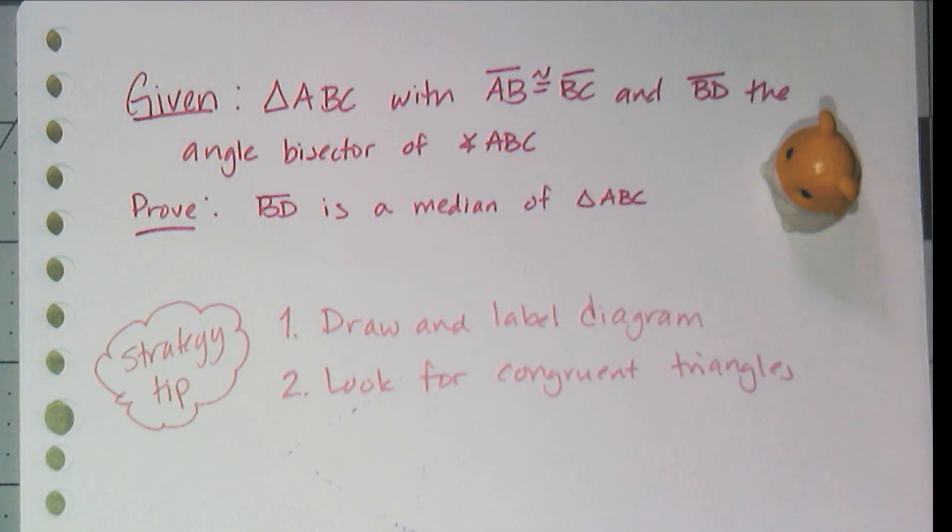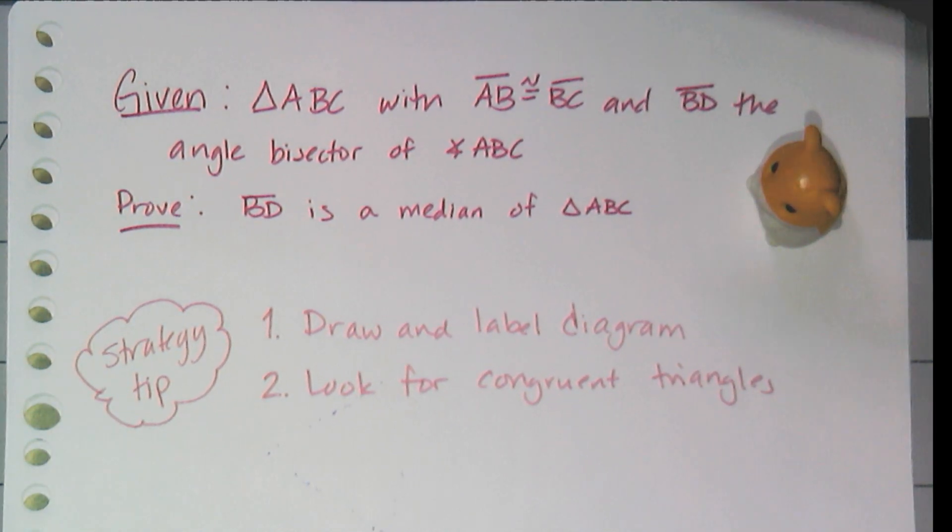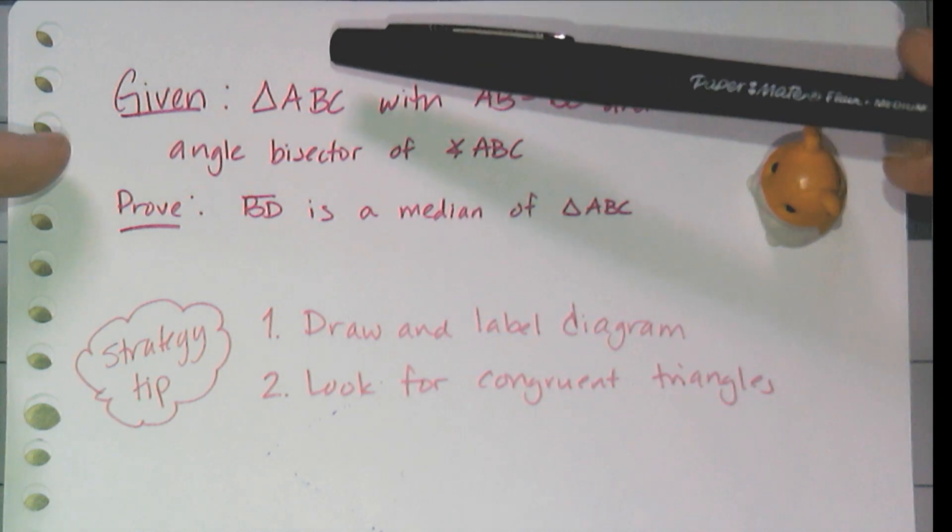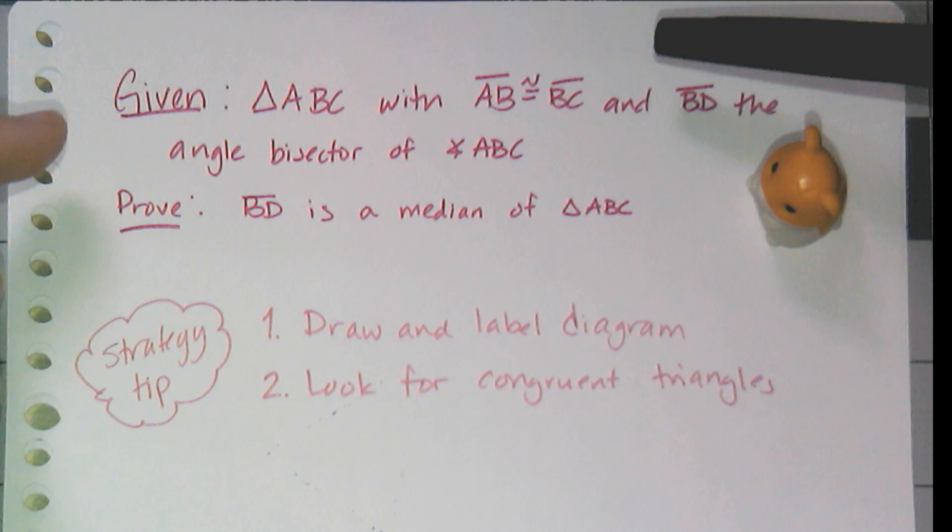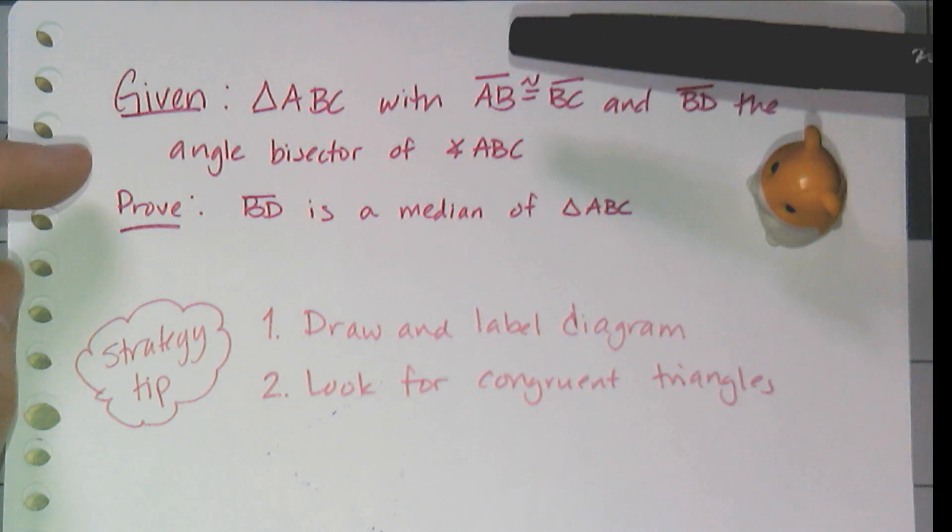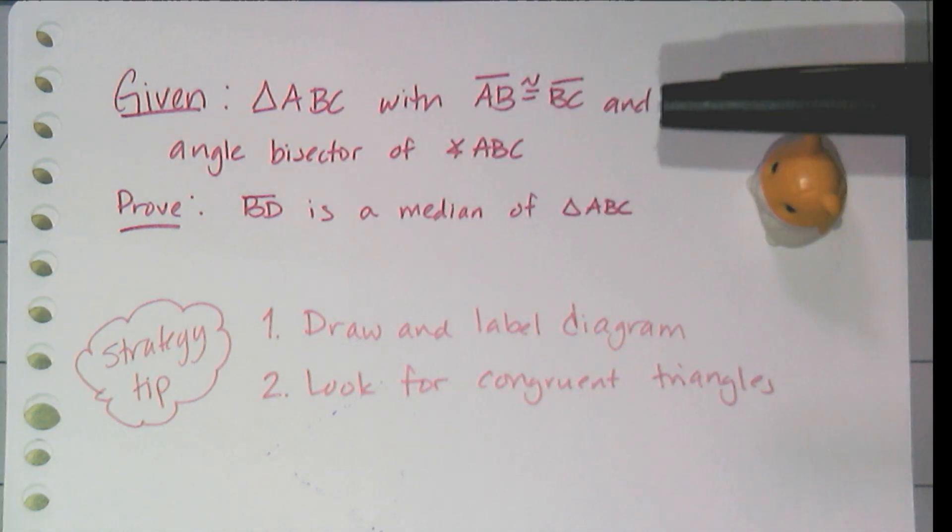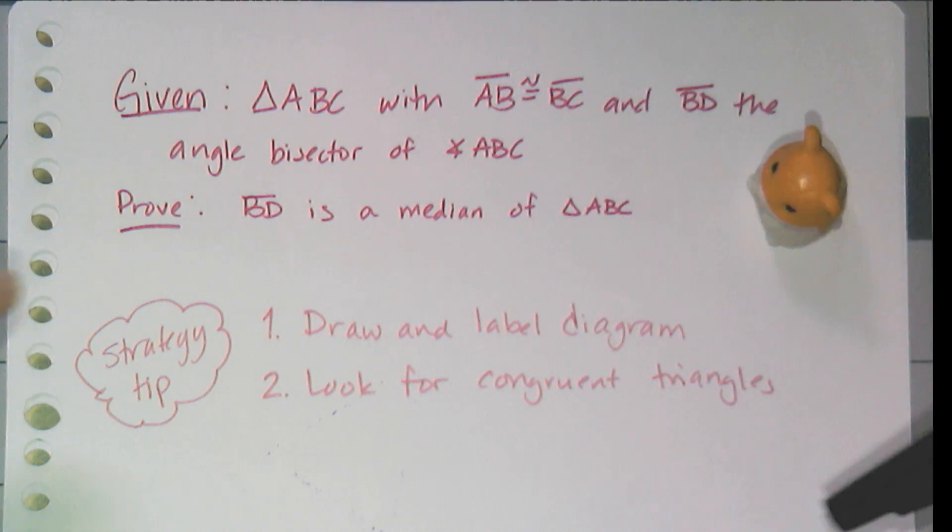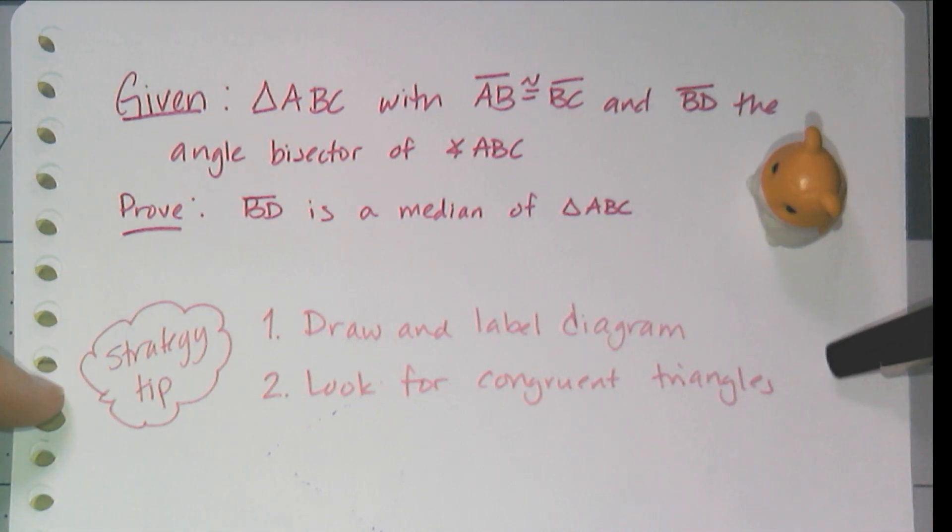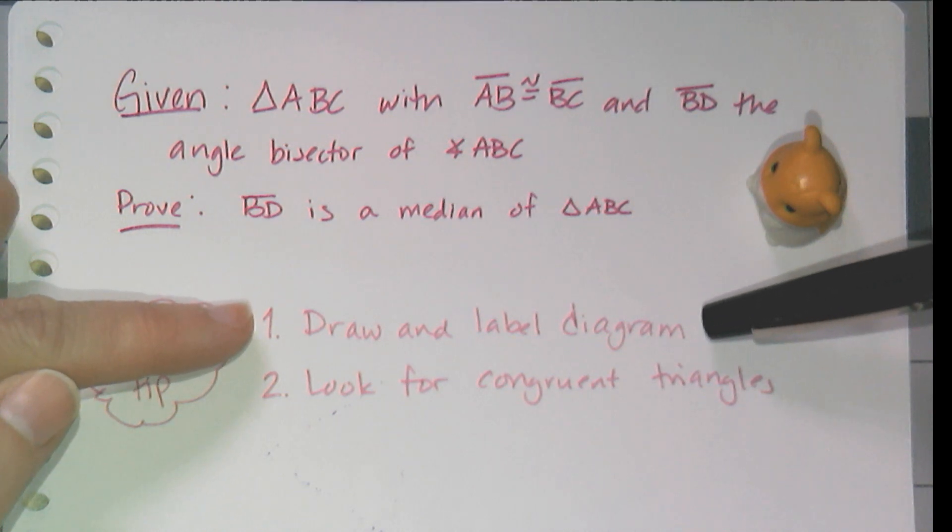So now let's actually try our hand at creating our first proof. I have been given triangle ABC with side AB congruent to BC. And BD is the angle bisector of angle ABC. And I want to prove that BD is a median of triangle ABC. So first off, general strategy tips. This is the number one strategy for geometry is if a picture has not been given to you, you draw it and you label it.